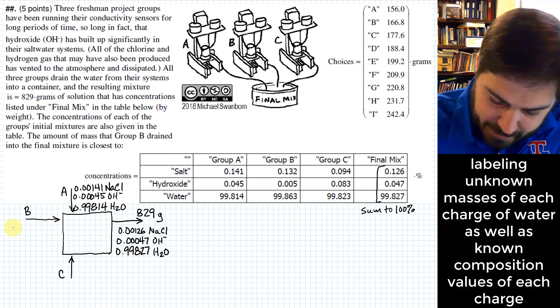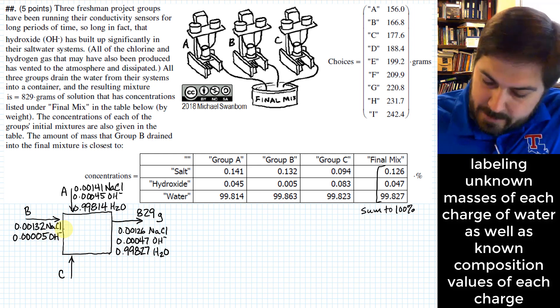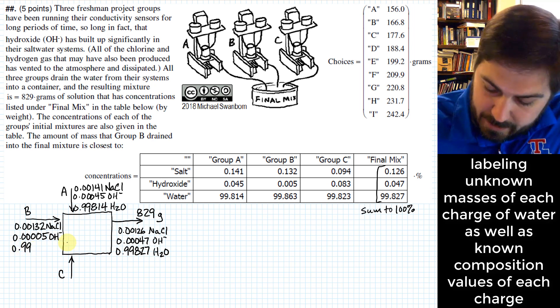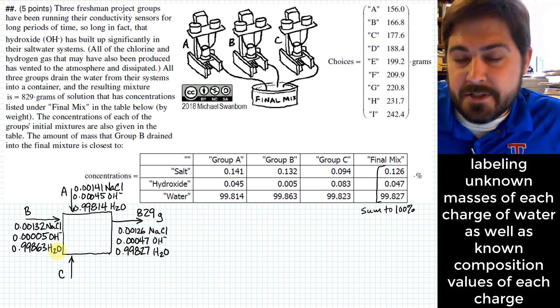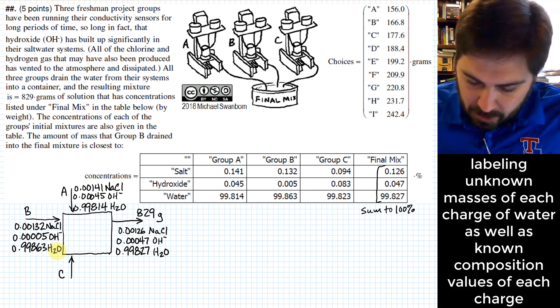For flow B, I will have 0.00132 NaCl, I'll have 0.000005 hydroxide, and 0.99863, and all I'm doing with all of these is just expressing each of these percentages as decimals rather than as percentages.